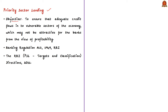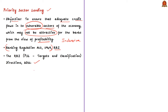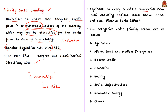The objective of the PSL program is to ensure that adequate credit flows into the vulnerable sectors of the economy, which are not attractive for banks from the view of profitability. It is held as a significant reform in the banking sector as it ensures inclusive credit facility to the disadvantaged sectors of the economy. Reserve Bank of India, in exercise of its powers as per the Banking Regulation Act of 1949, issued PSL Targets and Classification Directions 2016. As per these guidelines, banks have to channelize part of their credit to sectors that come under the priority sector lending categories. As of December 2019, these directions apply to every scheduled commercial bank licensed to operate in India by RBI, but are not applicable to regional rural banks and small finance banks.